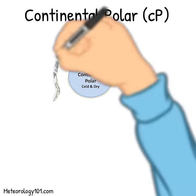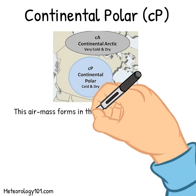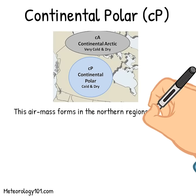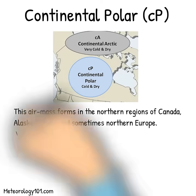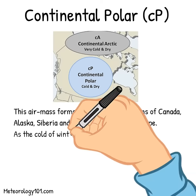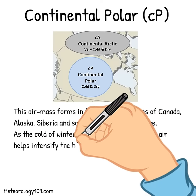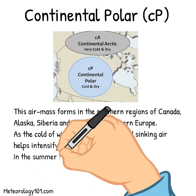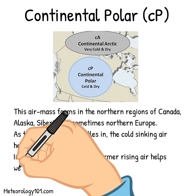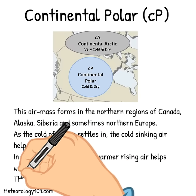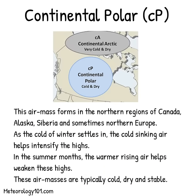The continental polar air mass forms in the northern regions of Canada, Alaska, Siberia, and sometimes northern Europe. As the cold of winter settles in, the cold sinking air helps intensify the highs. In the summer months, the warmer rising air helps weaken these highs. These air masses are typically cold, dry, and stable.